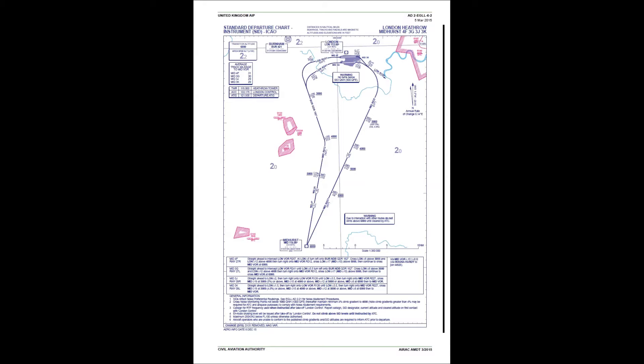We'll look at the chart here from the UK AIP. Basically we'll climb straight ahead, then it's a left turn to pick up London VOR radial 241, and then we'll continue on the departure — turn at 5 DME, left turn to 162 outbound from Burnham, and then right to 192 at Meadowhurst.